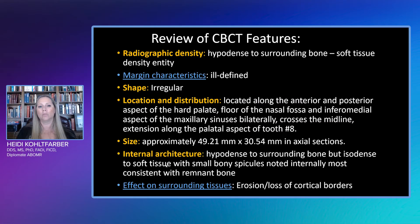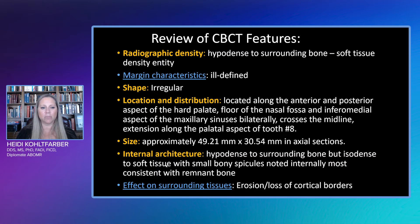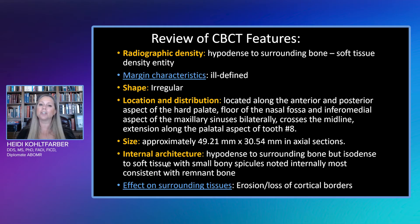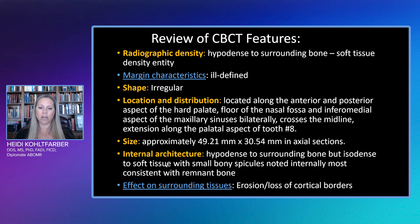So what are our radiographic features? This is hypodense to surrounding bone — really more of a soft tissue density entity. Marginal characteristics are largely ill-defined; we can't tell exactly where it ends. The location spans the anterior and posterior hard palate, floor of the nasal fossa, and the infero-medial aspect of the maxillary sinuses bilaterally. It crosses the midline and extends along the palatal aspect of tooth number eight, though we didn't see root resorption. Approximate size in axial sections was about 49mm by 30.5mm, but there's a large soft tissue component we can't fully see. Internal architecture is hypodense to surrounding bone but isodense to soft tissue, with internal bony spicules most likely representing remnant bone. We do have erosion and loss of cortical borders.